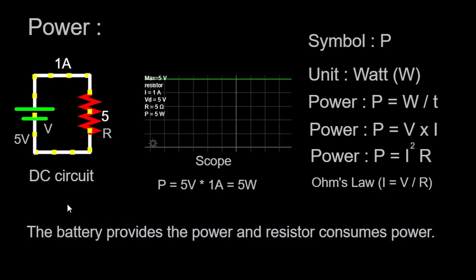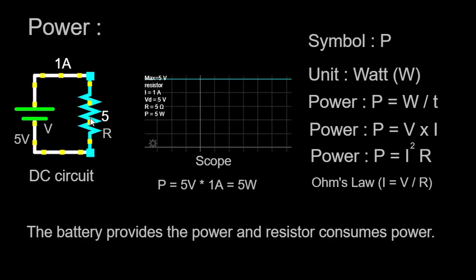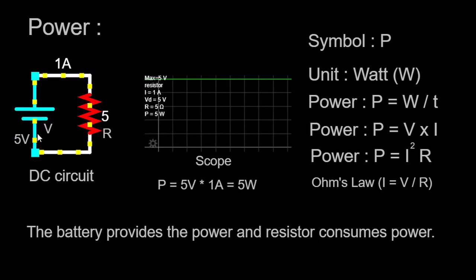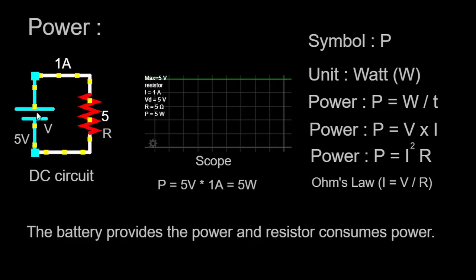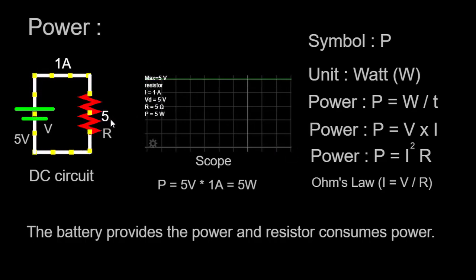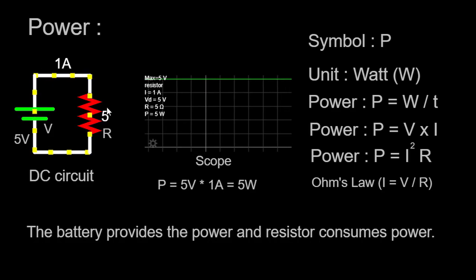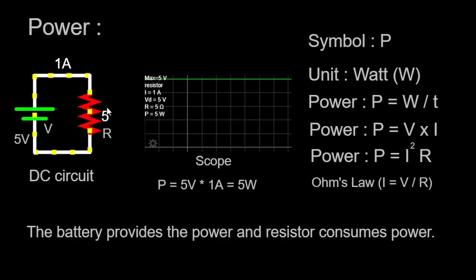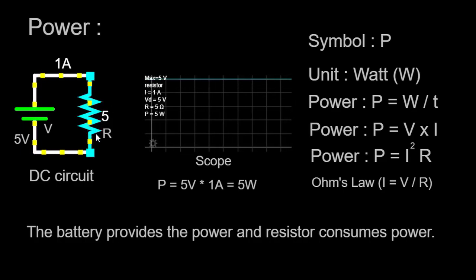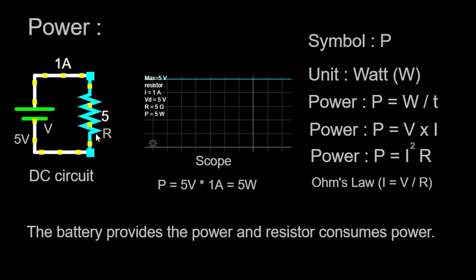Before we dive into power, let's take a moment to understand two essential elements of our circuit: voltage and resistance. Voltage, measured in volts (V), represents the potential difference between two points in an electrical circuit. In our setup, the 5-volt voltage source provides a fixed potential difference across our circuit, driving the flow of electrons. Resistance, measured in ohms, is a property that opposes the flow of electrical current. In our case, the 5-ohm resistor restricts the amount of current that can flow through the circuit, playing a significant role in determining the behavior of our circuit.